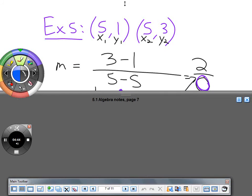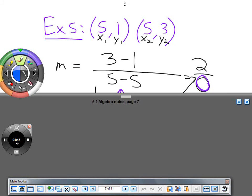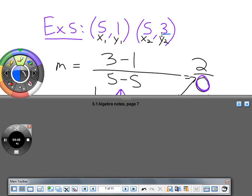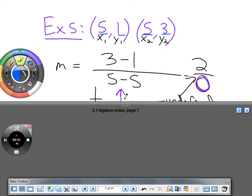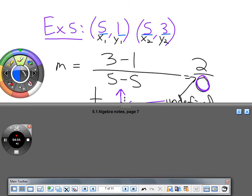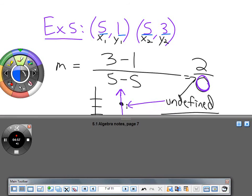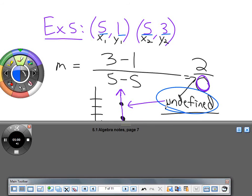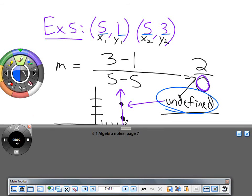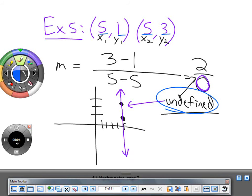When the X's are the same, we subtract the Y's: 3 minus 1 equals 2. Then 5 minus 5 gives us 0 on the bottom. Two divided by 0 is not 0 - it's undefined. That's the only acceptable answer. The line is straight up and down, very steep. We say it's undefined because you can't divide by 0.